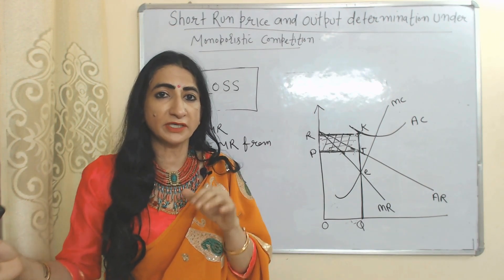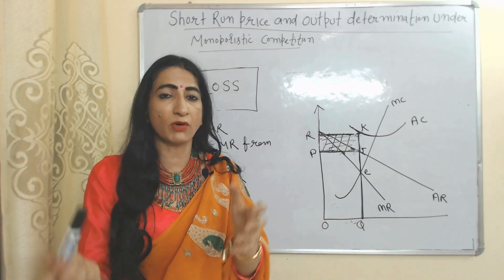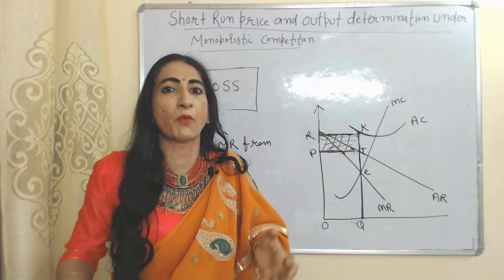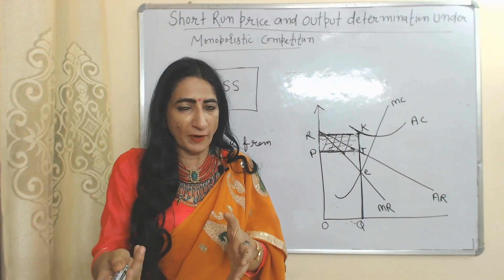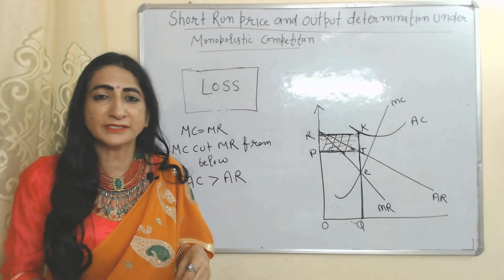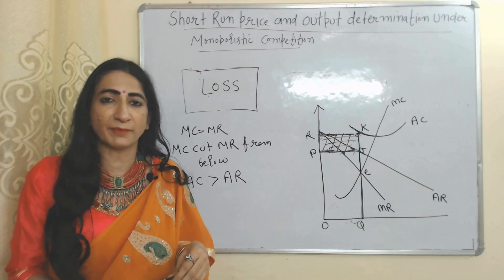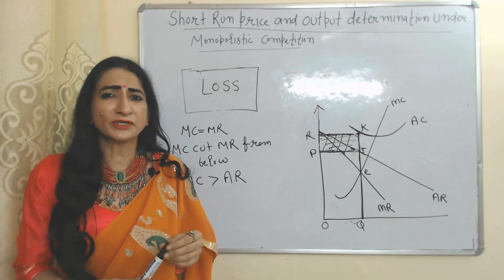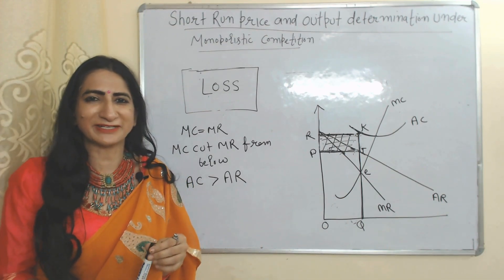During the short time period, monopolistic competition can receive super normal profit, normal profit, or loss. But during the long time period, monopolistic competition will always receive normal profit — because there is free entry and exit of firms. So this is all about price and output determination under monopolistic competition and perfect competition. Thank you so much for watching this video, bye, take care.